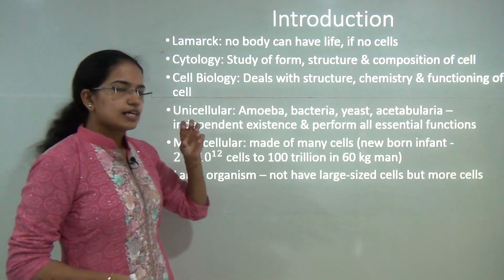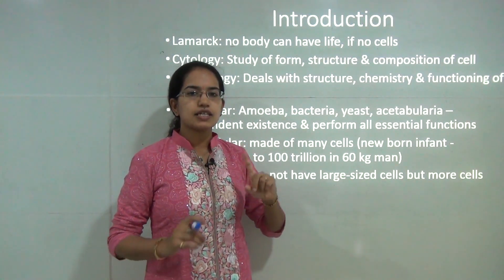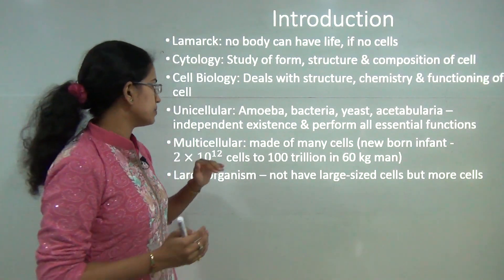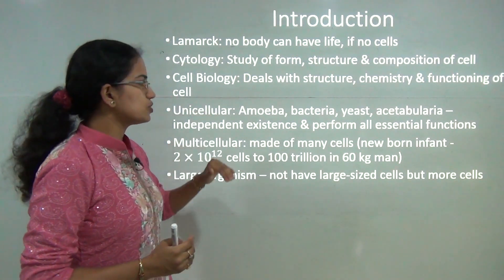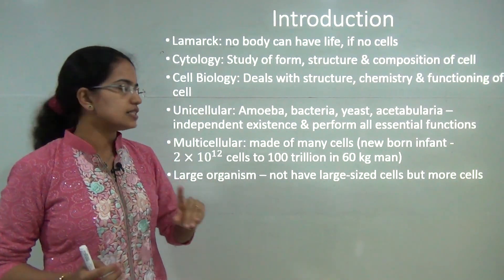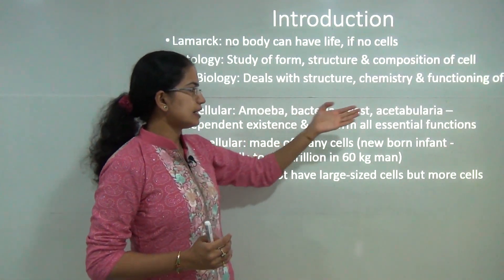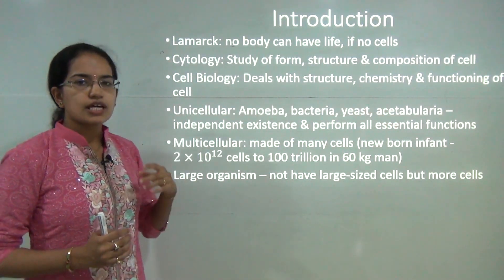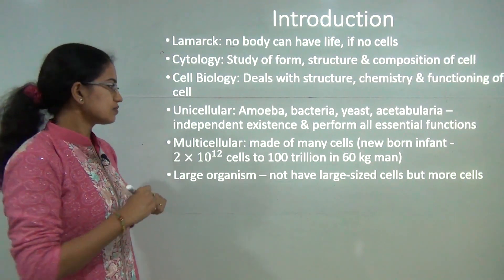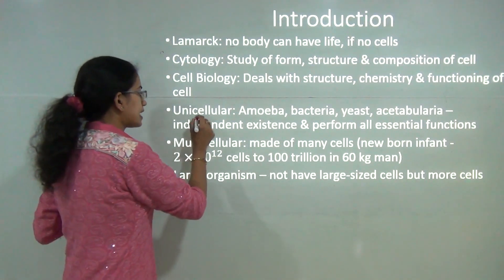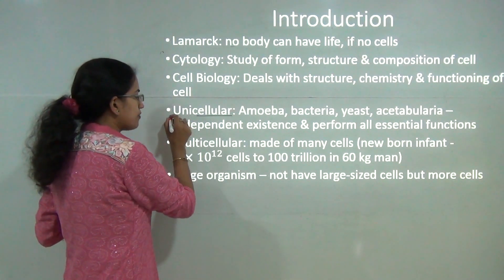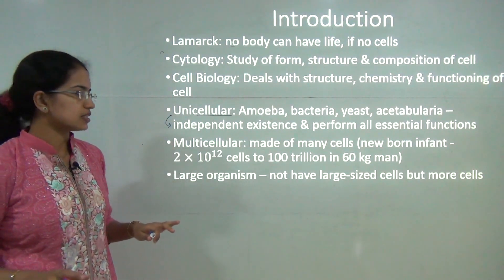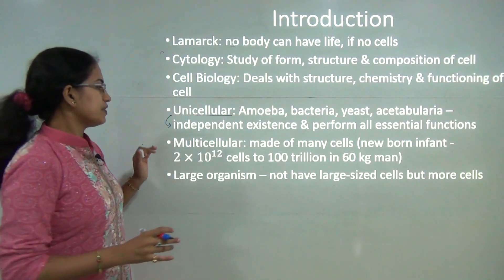When we classify cells, there could be either unicellular animals or multicellular animals. Unicellular are those which have a single cell — for example, amoeba, bacteria, yeast, and acetabularia. A basic characteristic is that they have an independent existence and can perform all essential functions.